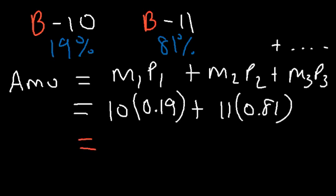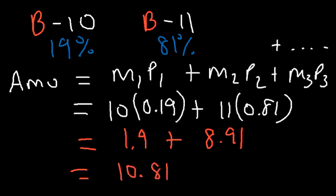So 19% of 10, that's like 1.9. And 81% of 11, I'm going to use the calculator for that, that's 8.91. So if you add these two numbers, you should get the average atomic mass for boron, which is 10.81.